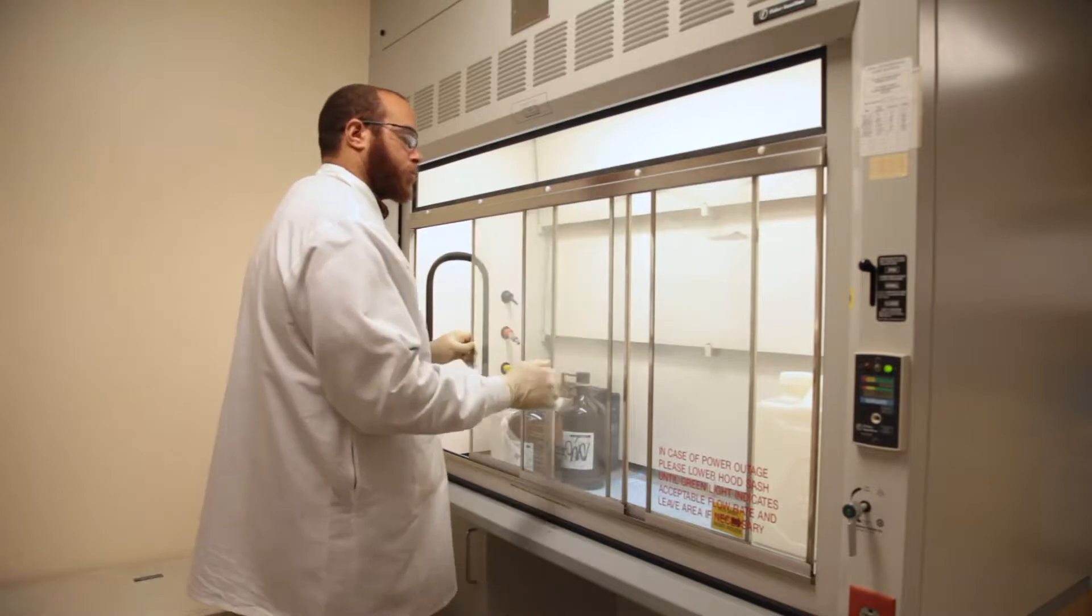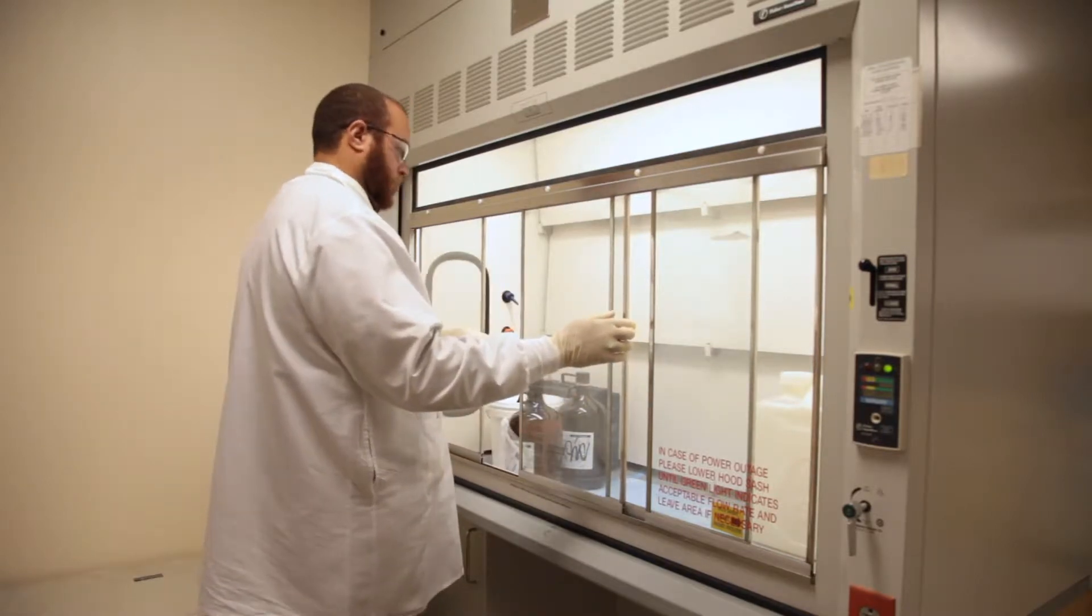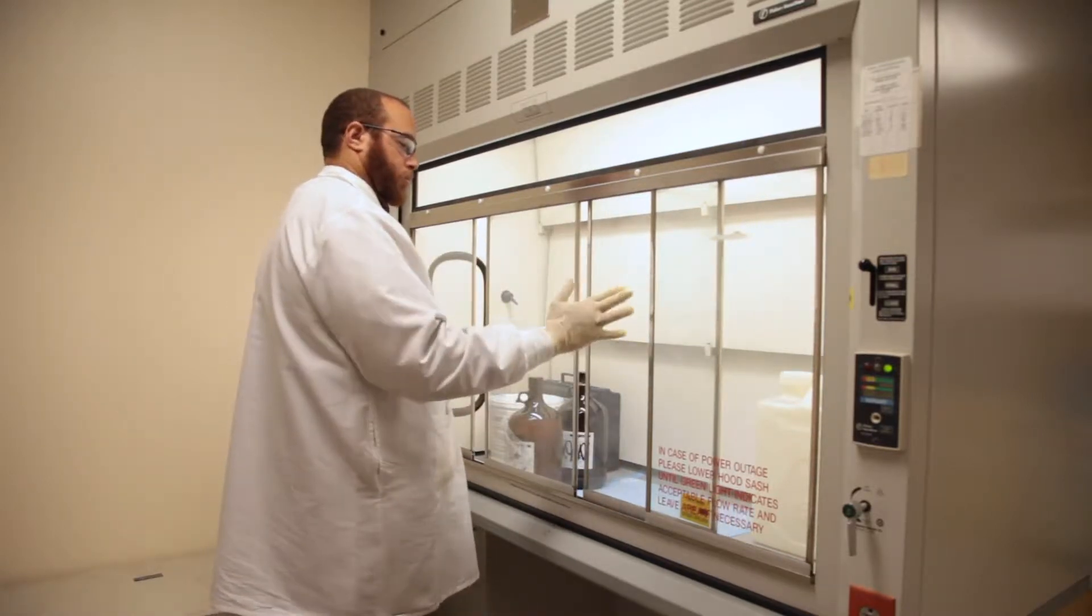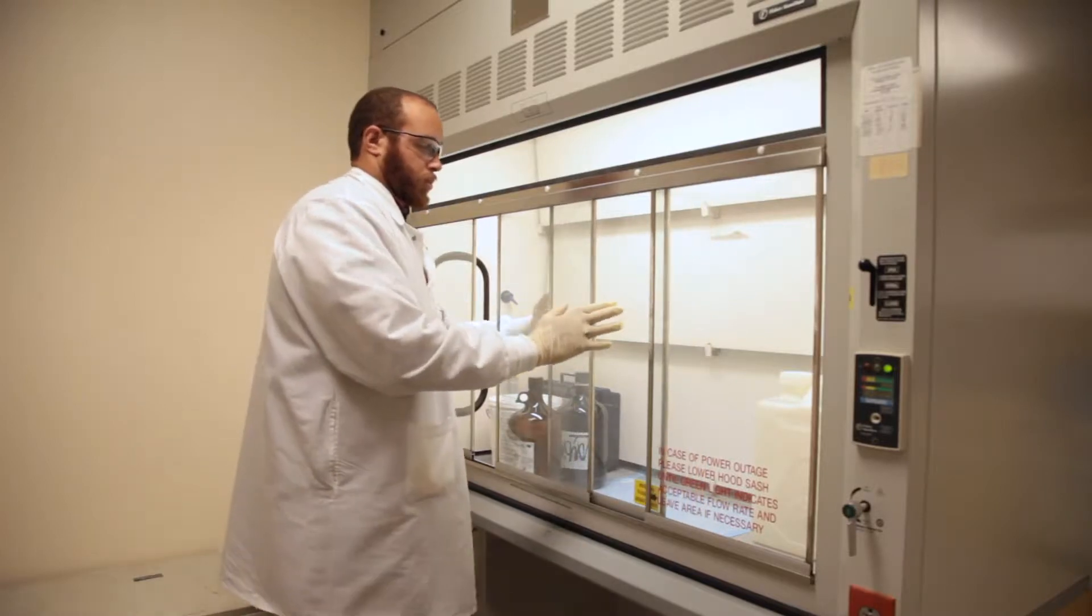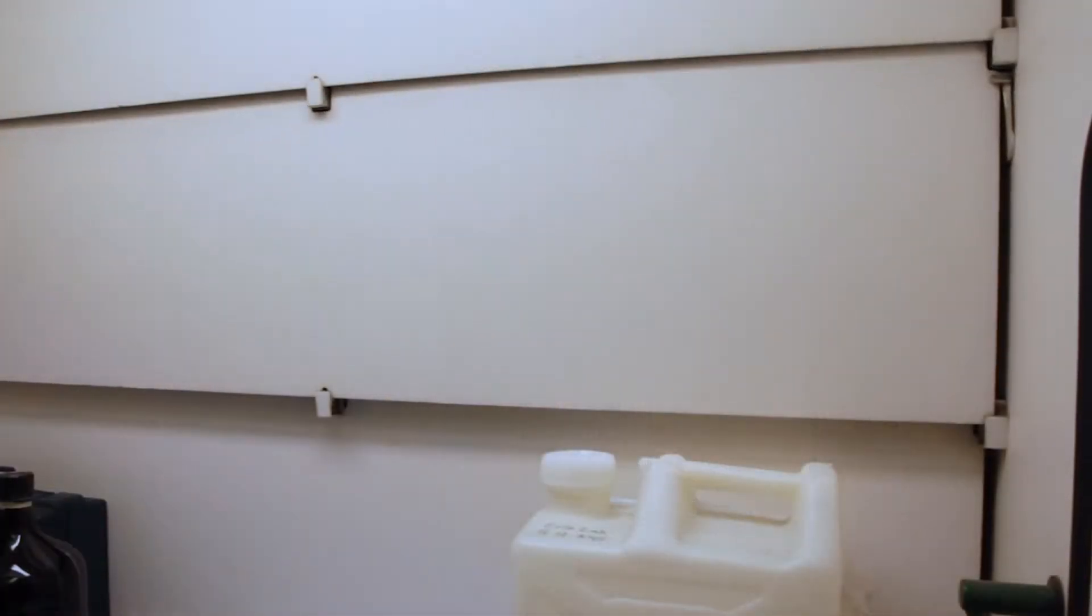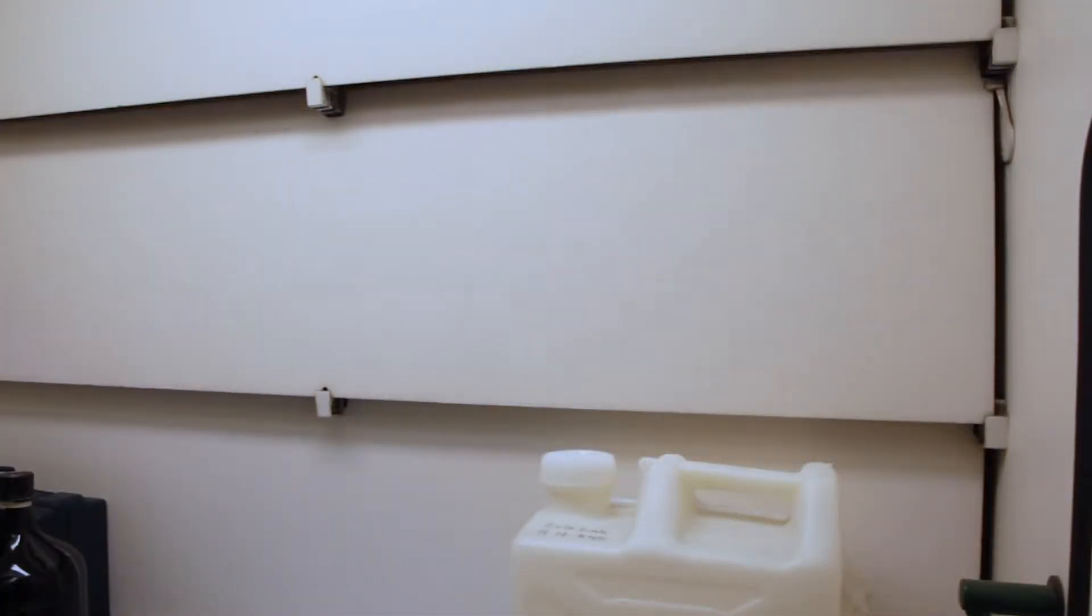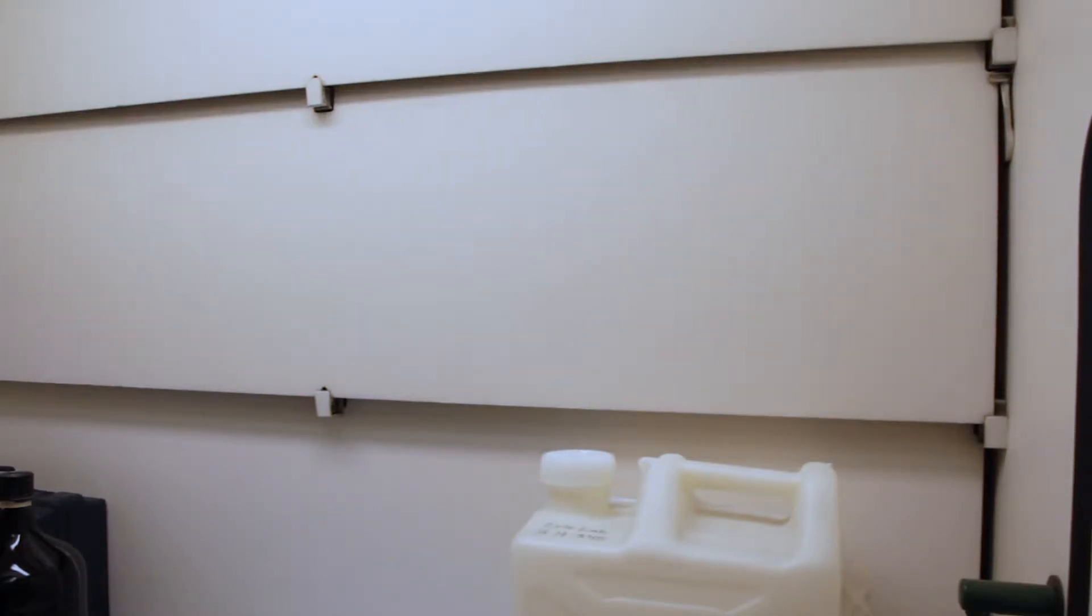Laboratory fume hoods are typically three-sided enclosures with an adjustable clear sliding window or sash. Components for a fume hood include baffles, which are movable partitions used to create slotted openings along the back of the hood body to maintain uniform airflow.